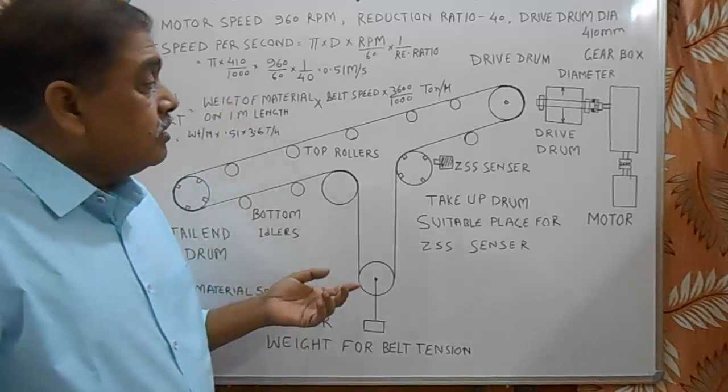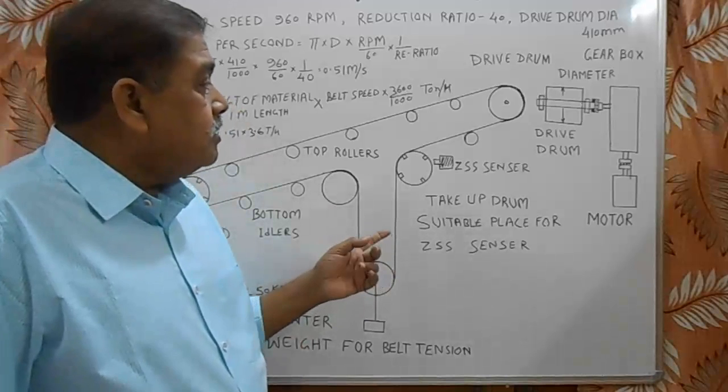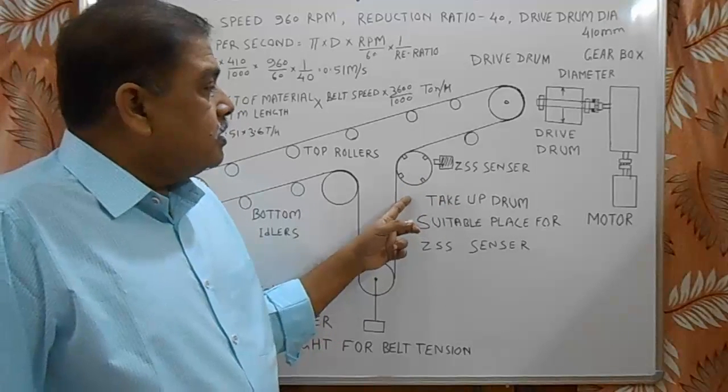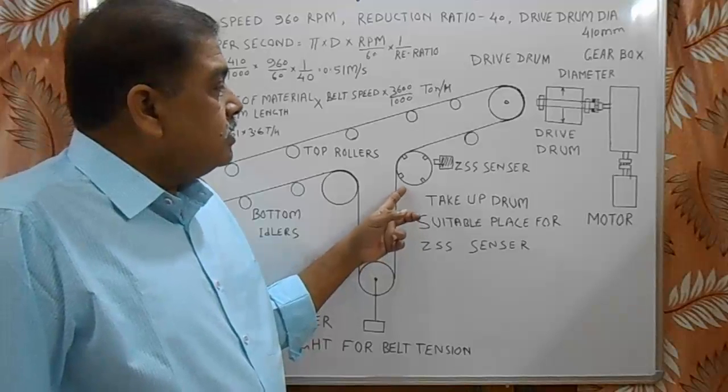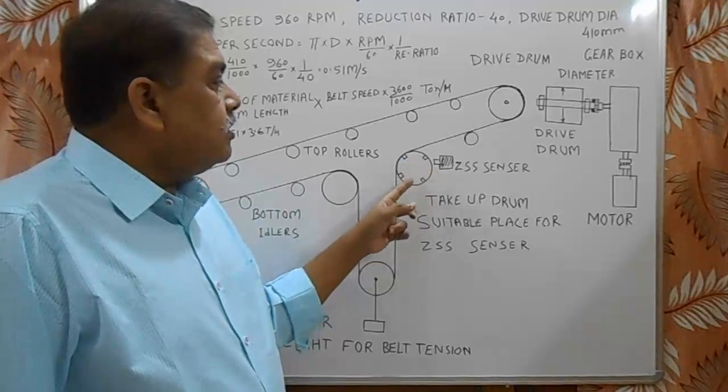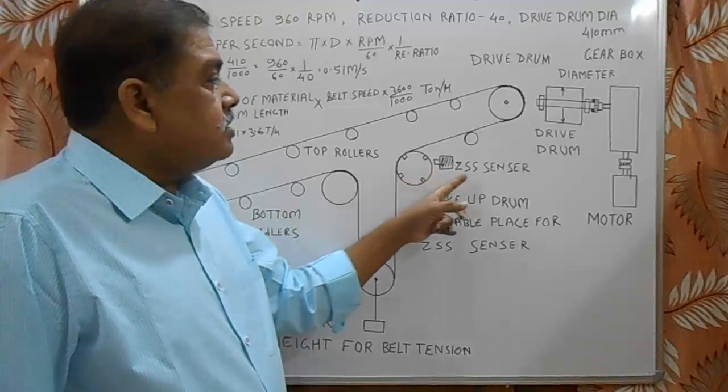For the safety of belt we use ZSS sensor. The take-up pulley is the best place for fitting ZSS sensor. Here we put four magnetic pieces welded on the drum and this is ZSS sensor.